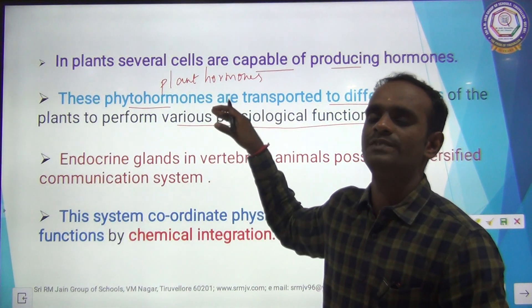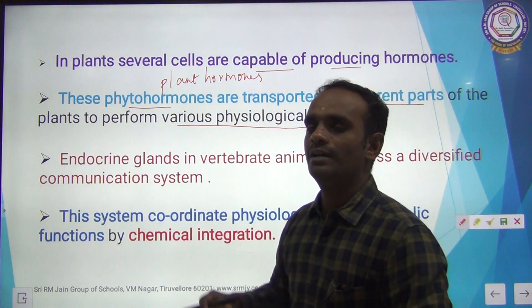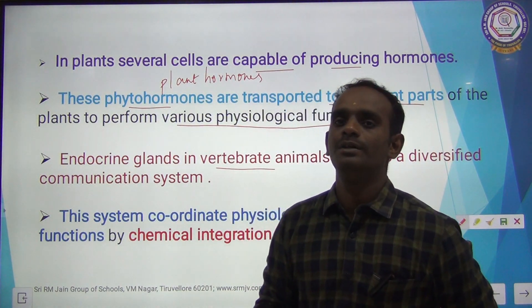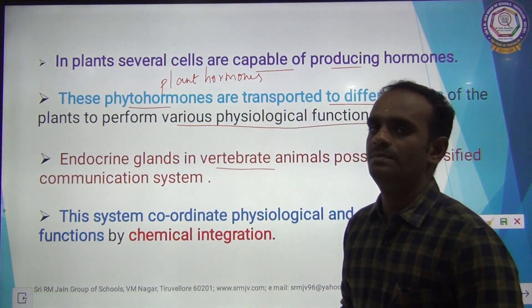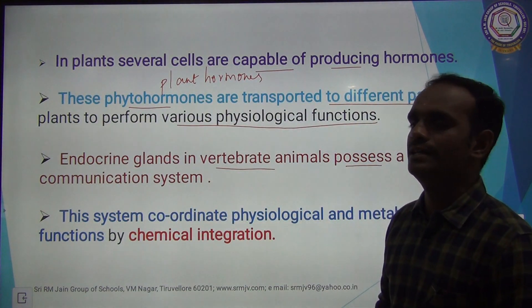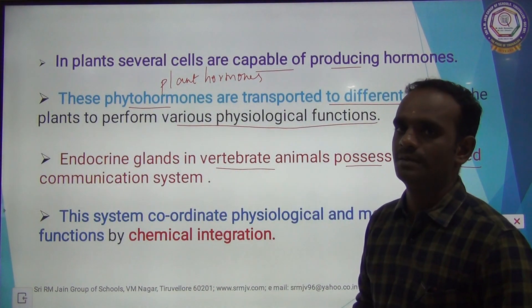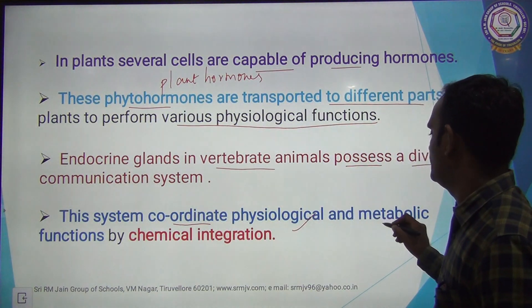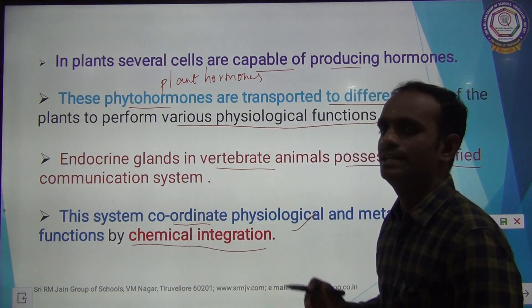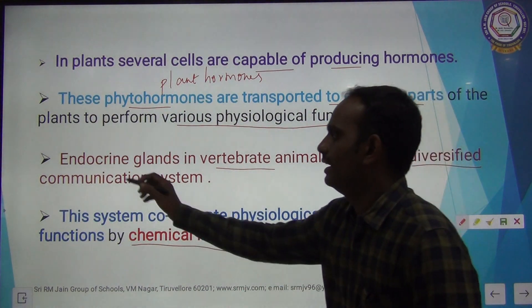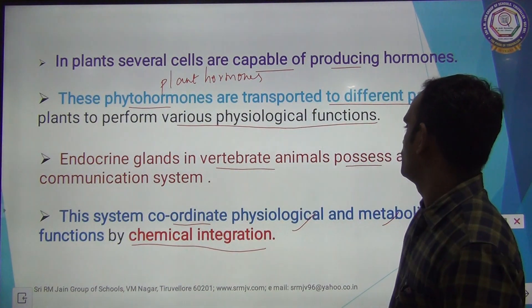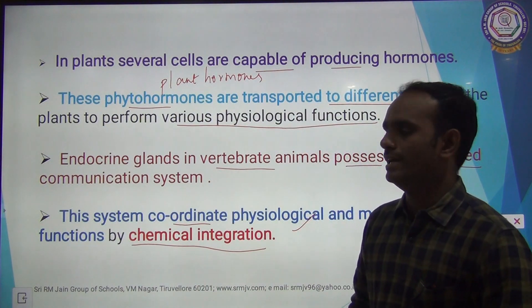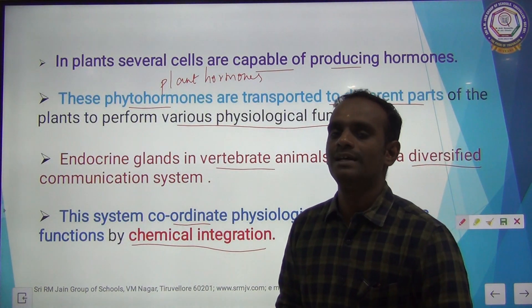The next one is endocrine glands in vertebrate animals. The endocrine glands possess a diversified communication system. This system coordinates physiological and metabolic functions by releasing chemical integrations, that is called hormones.